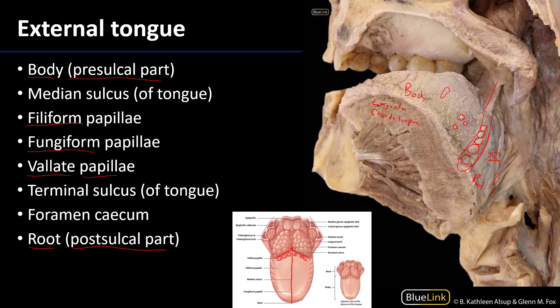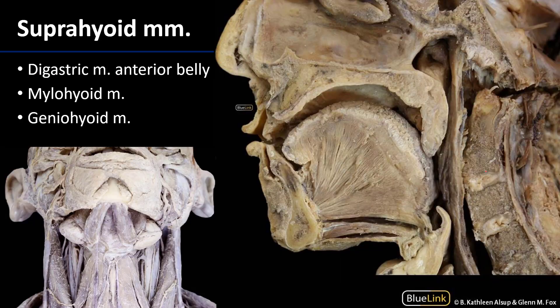In terms of muscles of the tongue, we're talking largely about the hypoglossal nerve. Here are some of the suprahyoid muscles. In the anterior view we can see the anterior bellies of the digastricus muscles. In sagittal section this would be the anterior belly of the digastricus muscle. Between them, running along and coming down, is the mylohyoid muscle, which forms the floor of the oral cavity.